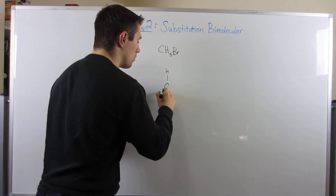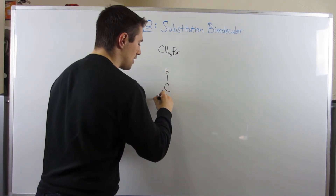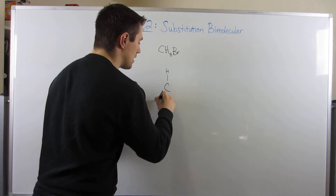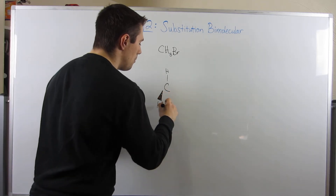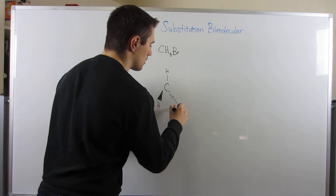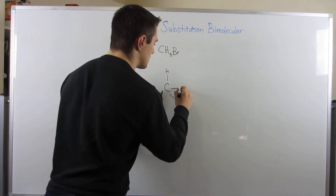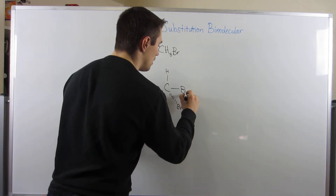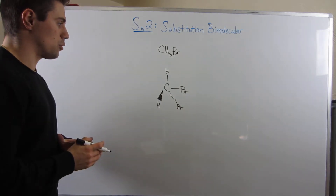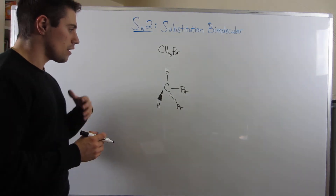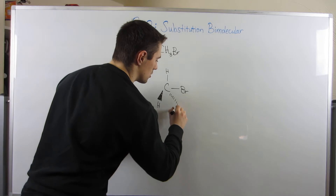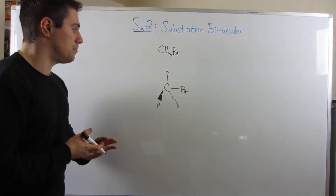Now, throwback to Stereochem — methyl bromide is not a stereocenter, but I'm going to draw him out like this and you'll see why in a second. Let's look at methyl bromide real quick.